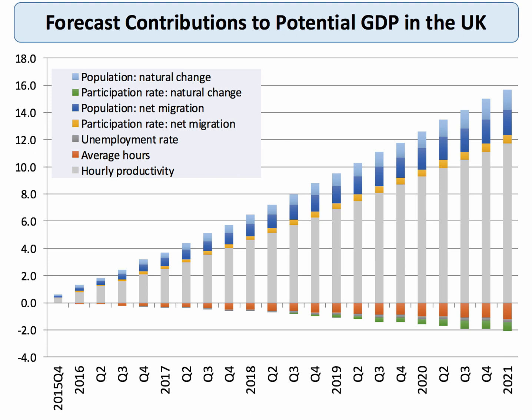Where does potential output come from? It comes from population growth, more people employed in the labour force, migration of skilled people, fewer people out of work, and people working longer hours. Crucially, potential GDP is dominated by changes in productivity — most of the increase in potential GDP in the UK comes from higher productivity. So if you take one thing from this revision webinar, it's that supply-side policies aimed at increasing productivity are likely to be most significant in increasing potential growth.